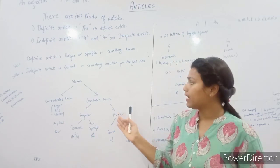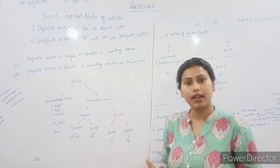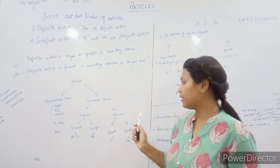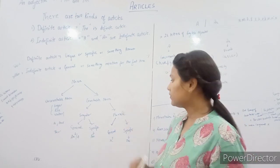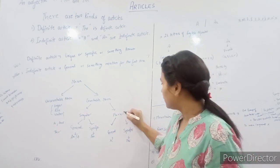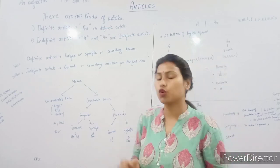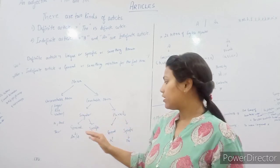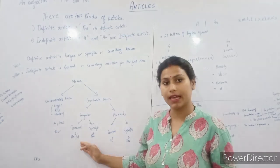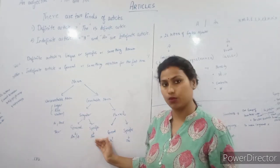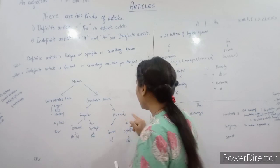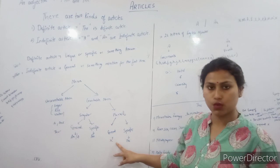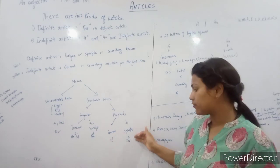Countable nouns are divided into two parts: singular and plural. Singular means single, and has general and specific forms. In general, we use a and an. In specific, we use the. Plural also has general and specific. In general plural, we don't use an article. In specific plural, we use the.